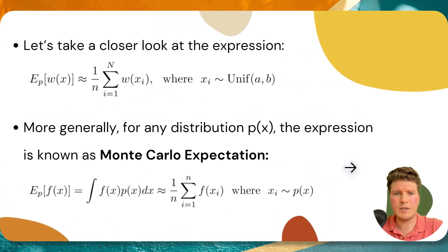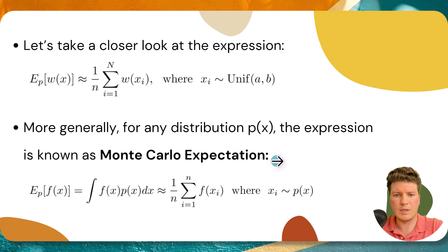Let's take a closer look at this expression. We're taking the expectation of w(x) and approximating it as an average of samples w(x_i) drawn from a uniform sampling distribution. In general, for any distribution p(x), this expression is known as Monte Carlo expectation.